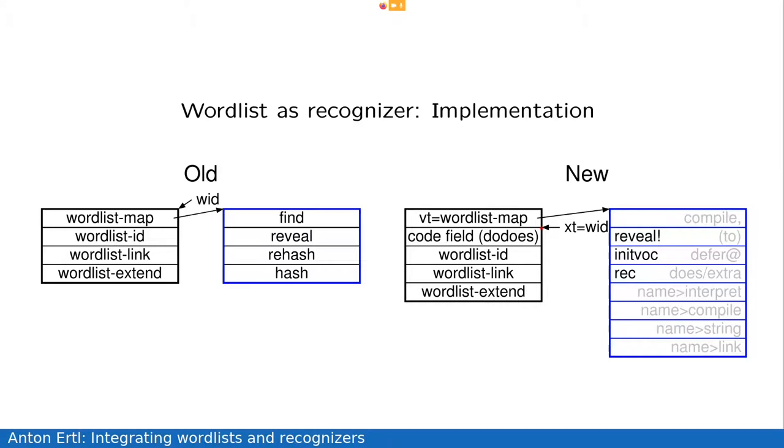And the new implementation implements this. So, this is a specific structure, which only is useful for wordlists. And here we have an actual word. And this, so the XT of the word is the bit. It also has a new field, the code field, which uses do-does and through do-does invokes this rec method. And this rec corresponds to the find here. We also have the others in some way. And since time is running out, I'm not going into it. The fields are also there. It's not that different. But we can now treat it as a word, for example, execute it.